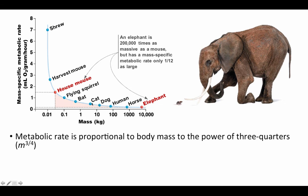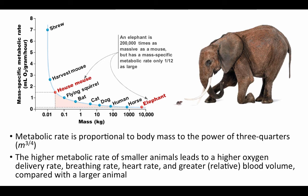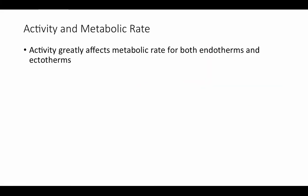The higher mass-specific metabolic rate of smaller animals leads to higher oxygen delivery rate, higher breathing rate, higher heart rate, and greater relative blood volume compared to larger animals — all physiological processes are ramped up to meet higher metabolic demands. This produces a characteristic 'mouse to elephant curve' seen across many physiological phenomena in animal physiology.